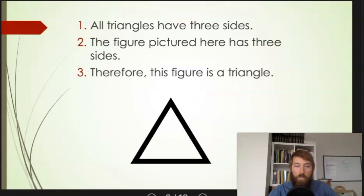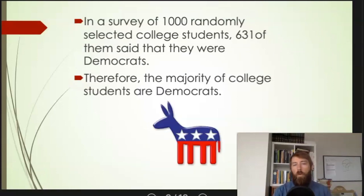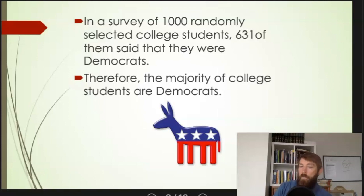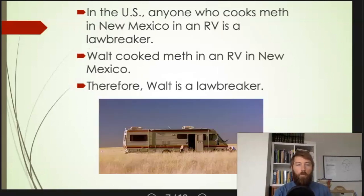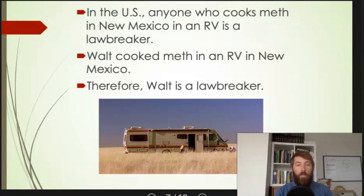Deductive arguments, on the other hand — all the information in the conclusion is found in the premises; it's kind of reworded. In the survey example, when we surveyed 1,000 students we didn't survey a majority of college students, so our conclusion contains more information than what's in the premises alone. In the lawbreaker example, all the information in the conclusion — what a lawbreaker is, who Walt is — is already found in the premises. So you can tell the difference between inductive and deductive based on whether the conclusion's information is already in the premises or whether new information is introduced.